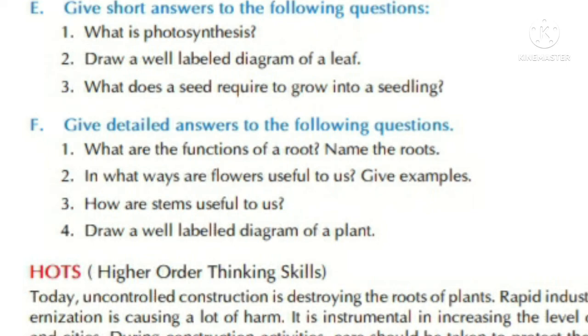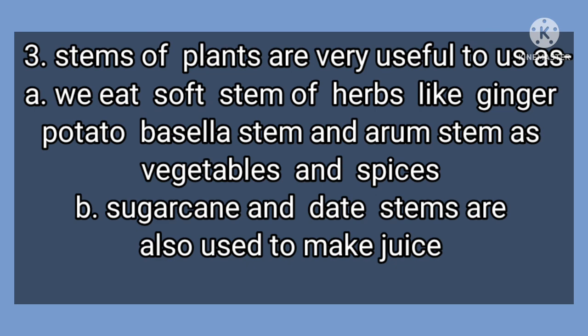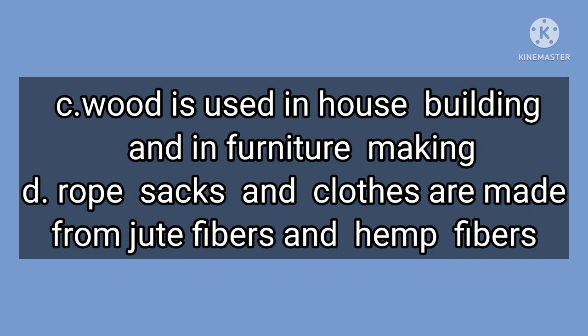Question three: how are stems useful to us? Stems of plants are very useful. We eat soft stems of herbs like ginger, potato, basil stem, and arbi stem as vegetables and spices. Sugarcane and date stems are also used to make juice. Wood is used in house building and furniture making. Rope, sacks, and clothes are made from jute fibers and hemp fibers.